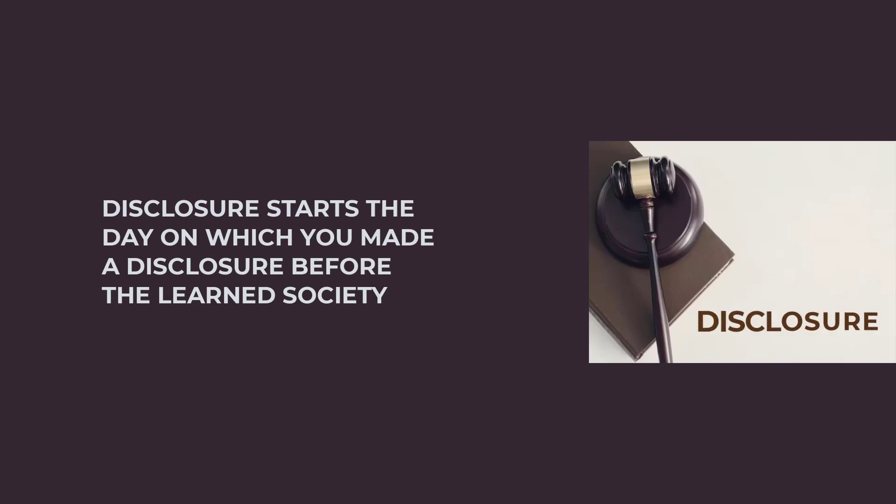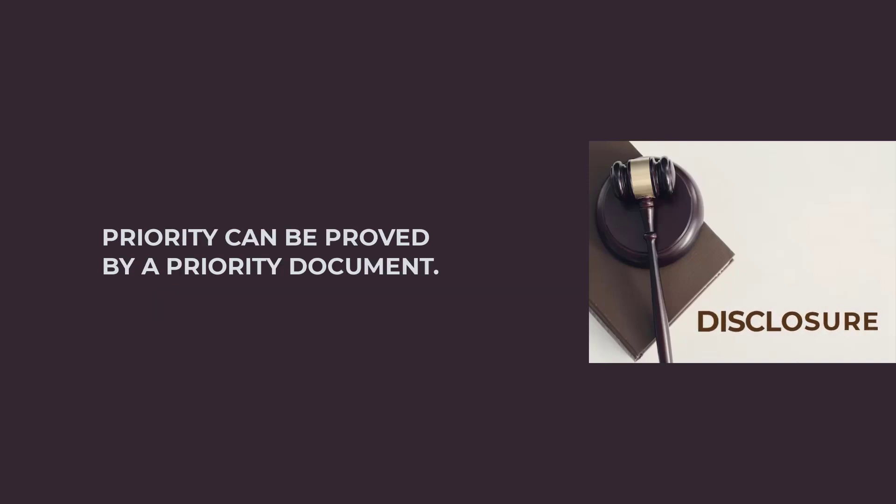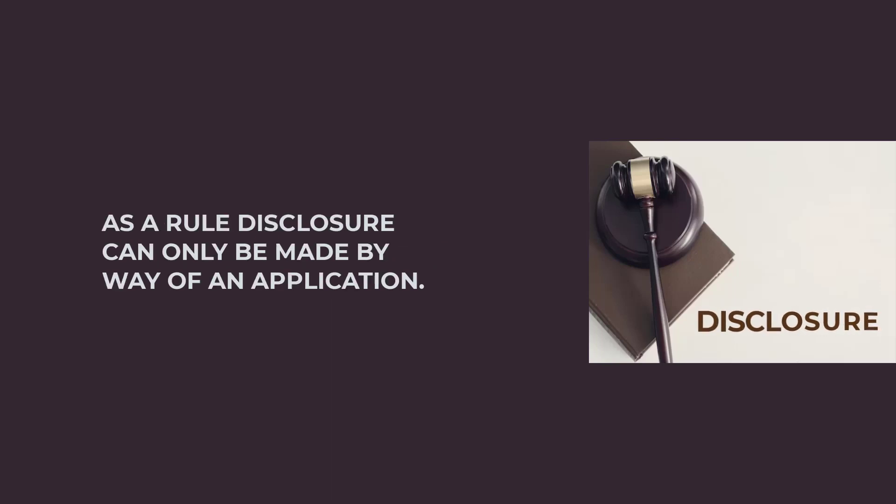That is why they refer to priority being proved by a priority document. A priority document will be the document on which you made the first disclosure. As a rule, disclosure can only be made by way of an application — a complete specification or a provisional specification — but there are certain instances where you will be able to rely on the disclosure through other means.